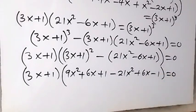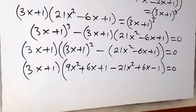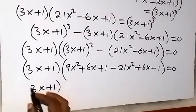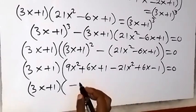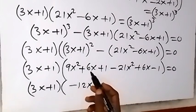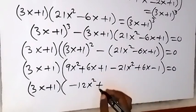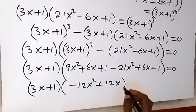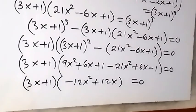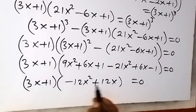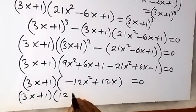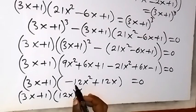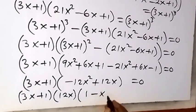Adding like terms: 9x² minus 21x² gives minus 12x². Then 6x plus 6x gives plus 12x. Then 1 minus 1 gives 0. So we have (3x+1)(−12x² + 12x) = 0. Factoring 12x out gives (3x+1)(12x)(1 - x) = 0.